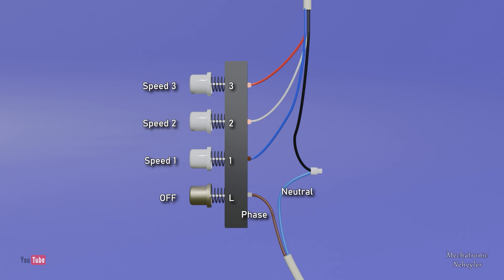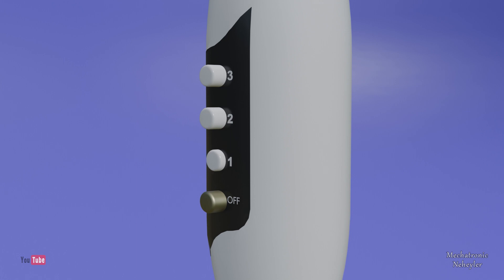Generally on the back of the speed selector it indicates with the letter L where the cable coming from the electrical network is connected, and with numbers the terminals that must be connected to the motor. When we press a speed button, the previous buttons are released to change the fan speed. By pressing the off button, it frees the other buttons from the speeds and does not stay stuck like the others.